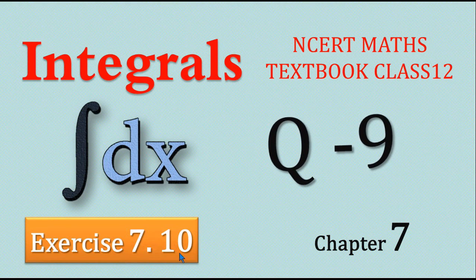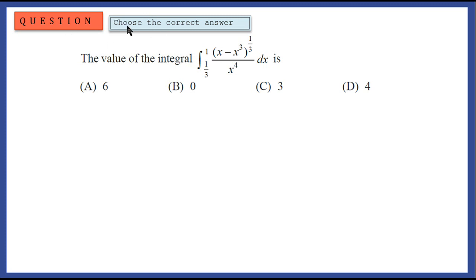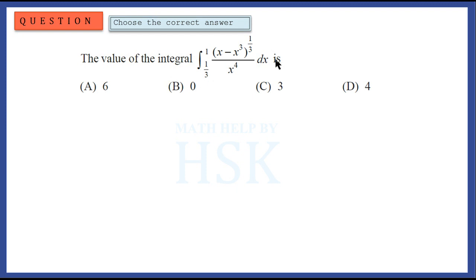Question number 9 of exercise 7.10. It is an objective question and we have to choose the correct answer. The question is: find the value of the integral — integration of (x minus x-cube) whole to the power of 1 by 3, upon x to the power of 4, dx, from the limit 1 by 3 to 1 — which of the following options is correct?